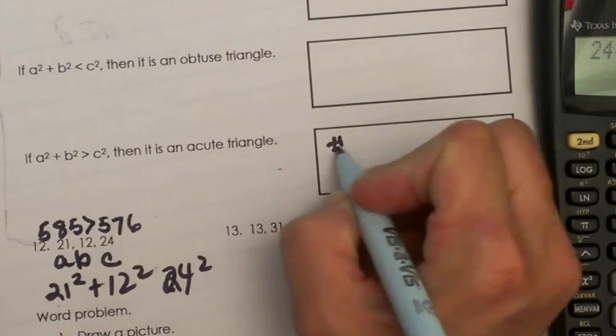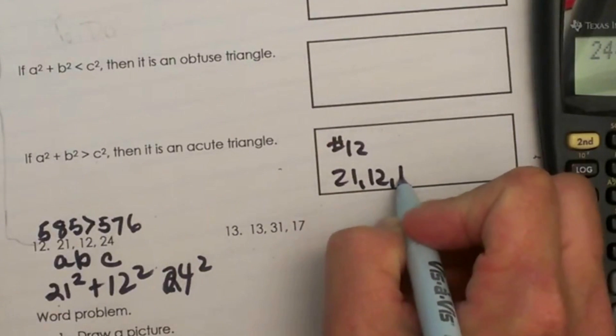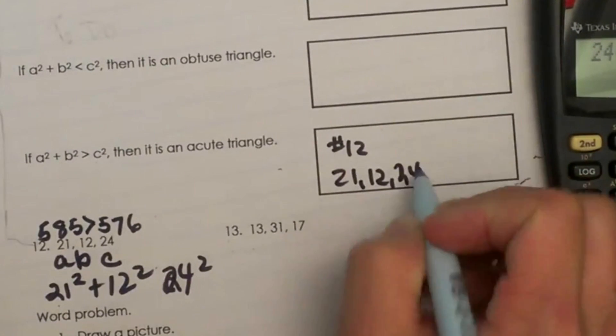So number 12, the three sides of 21, 12, and 24 are an acute triangle.